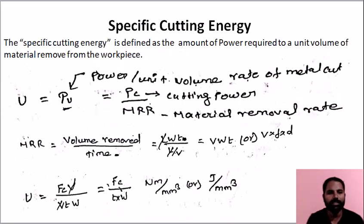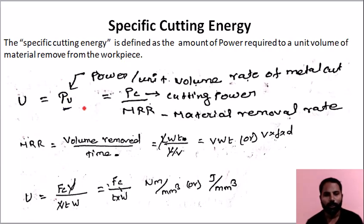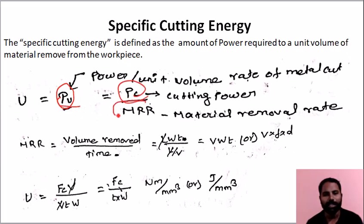Next is specific cutting energy — the amount of power required per unit volume of material removal. The energy needed to remove a unit volume of material is specific cutting energy. The formula is cutting power divided by material removal rate.